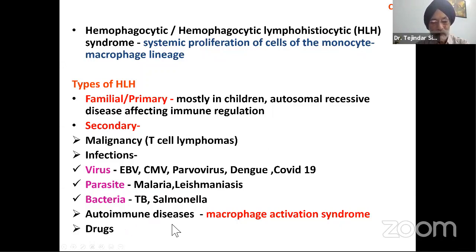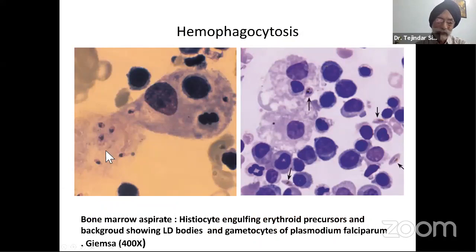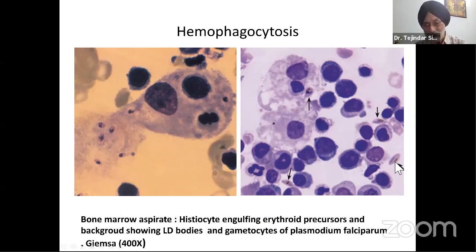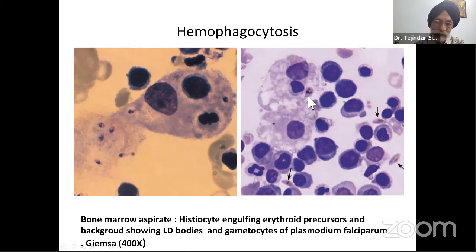Here we find a case of Kala-azar — you can see LD bodies in the macrophage, and the macrophage is also showing hemophagocytosis. There is pancytopenia in Kala-azar which is worsened by the presence of hemophagocytosis. This is a case of malaria — you can see the gametocytes of P. falciparum. Macrophages are increased and are showing not only hemophagocytosis but phagocytosis of the malarial parasite as well. So malaria also gives rise to pancytopenia and HLH.